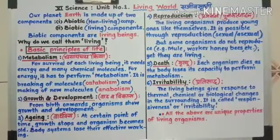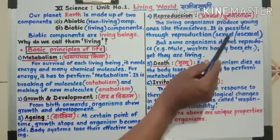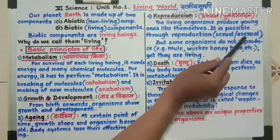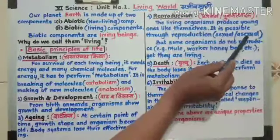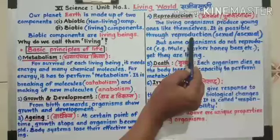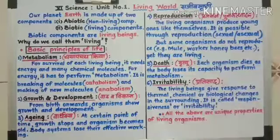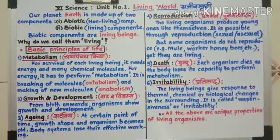It is possible through reproduction, either sexual or asexual. In sexual reproduction, male and female gametes are formed. In asexual reproduction, no male or female gametes are involved. By either method, living organisms produce young ones like themselves. That is reproduction — a key characteristic that distinguishes living from non-living.